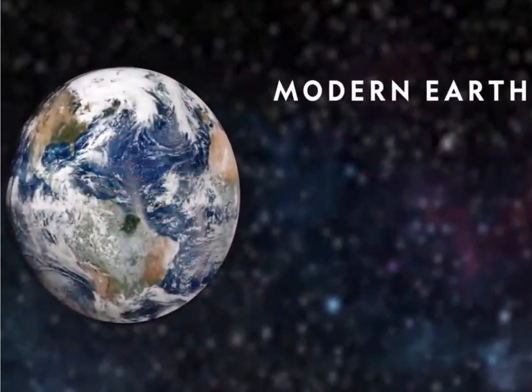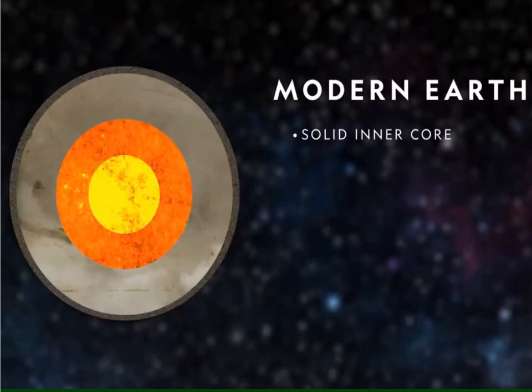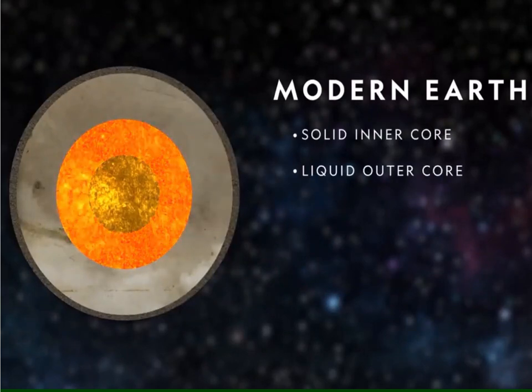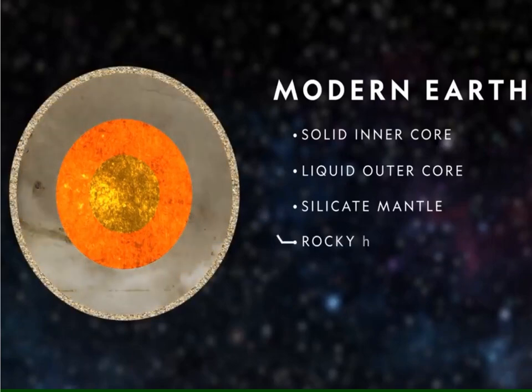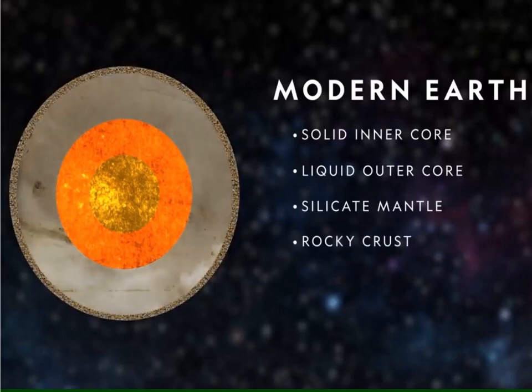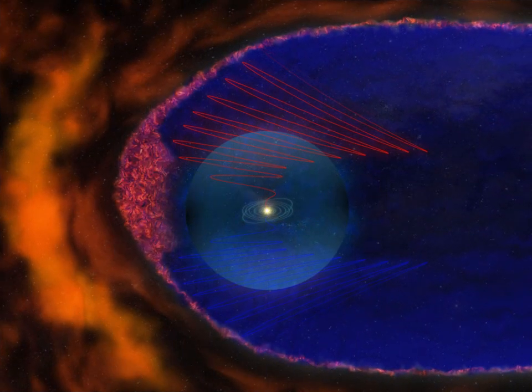Let us zoom in into the Earth's interior. We have the solid inner core, liquid outer core, silicate mantle, and rocky crust. Our planet has a nickel-iron core, which gives rise to an extensive magnetic field, which along with the atmosphere, shields us from the harmful radiation coming from the Sun.